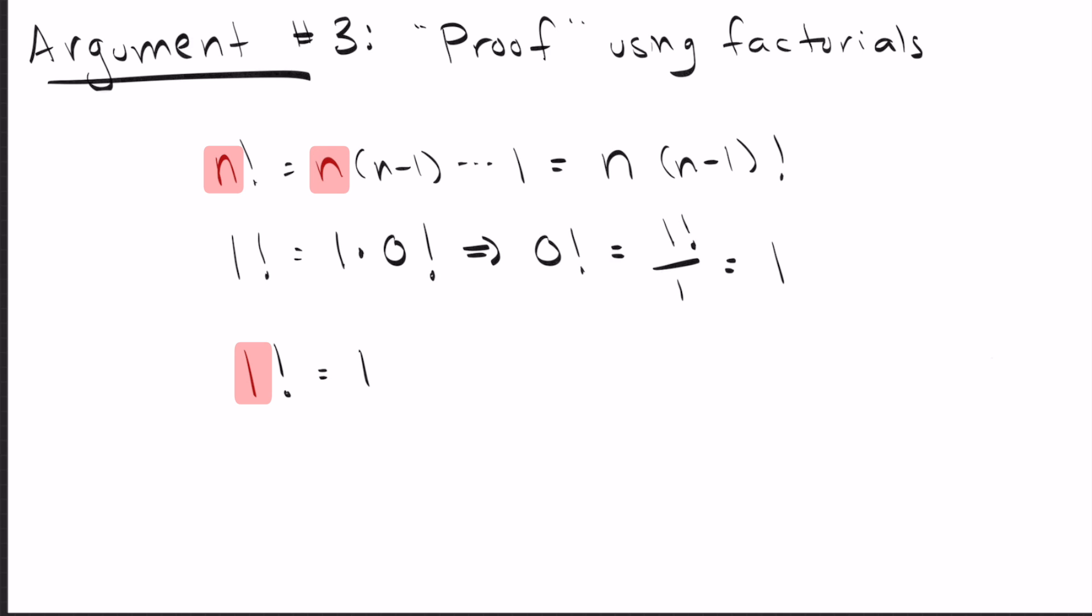But then notice up top here, our product stops at one. There is no more zero factorial left to get. All that that formula up top shows is that one factorial equals one. It doesn't tell us anything about zero factorial. So again, this one uses a flawed understanding of what factorial is. In fact, if you just go and look it up, you'll see most places define factorial as the product of all positive integers less than the number. So there is no zero involved in there.